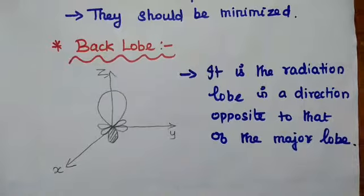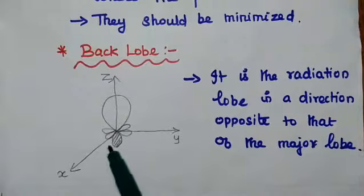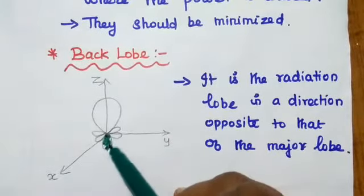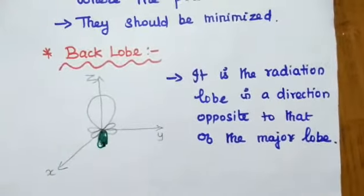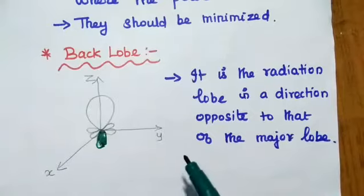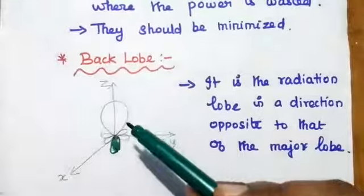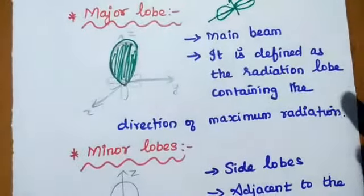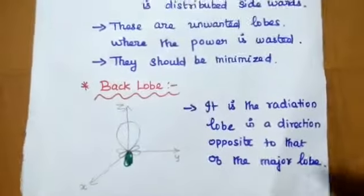Next is back lobe. It is the radiation lobe in a direction opposite to that of the major lobe — just opposite to the major lobe. This is also unwanted in some cases, but in some applications it is also very useful with respect to the major lobe in a desired direction. These three categories — major lobe, minor lobes, and back lobe — are very important to represent the parts of a radiation pattern.